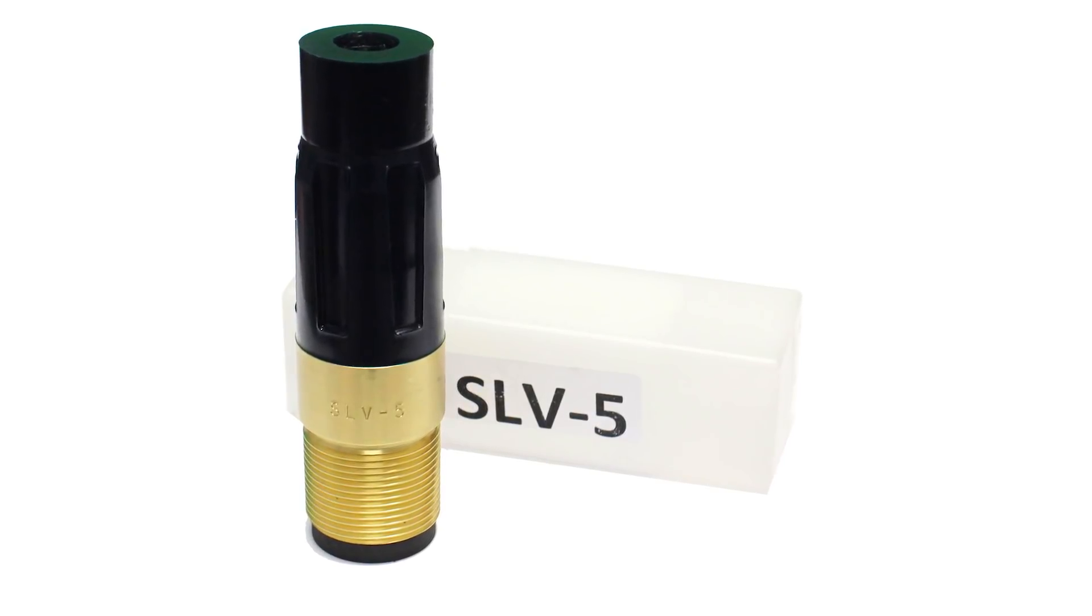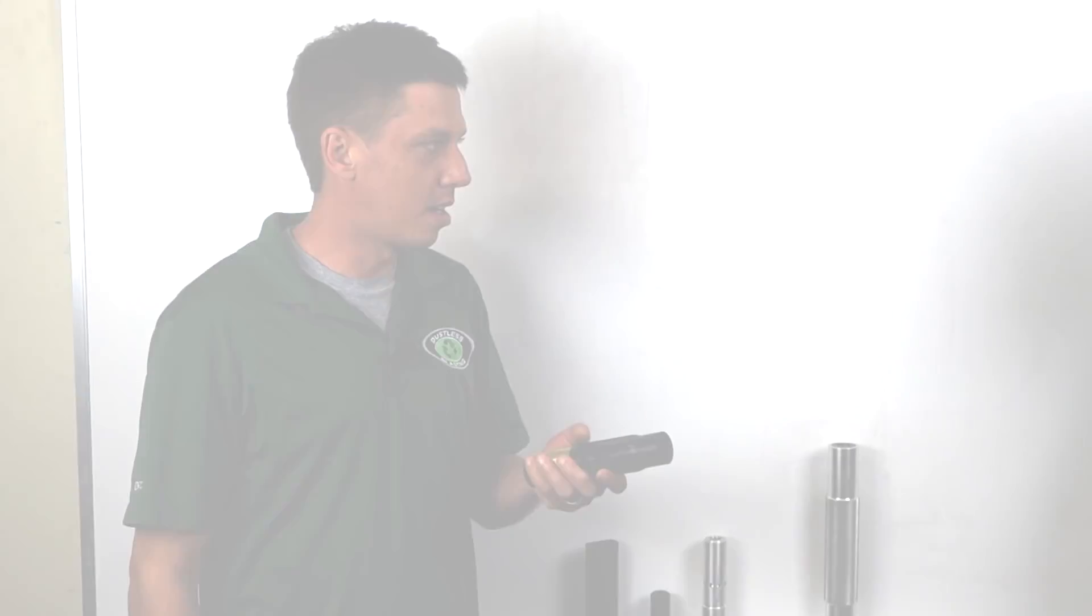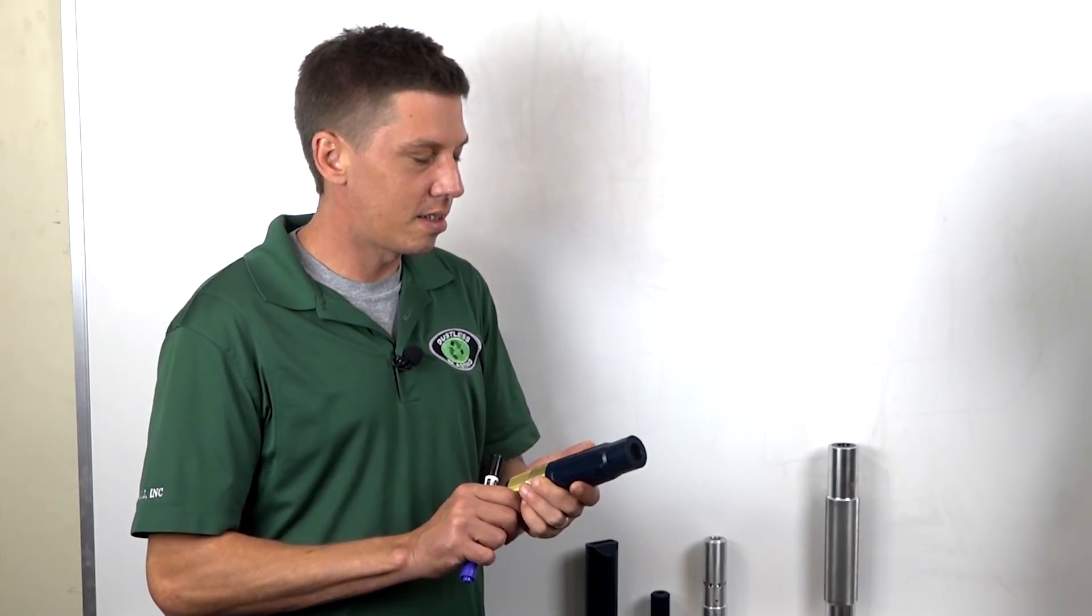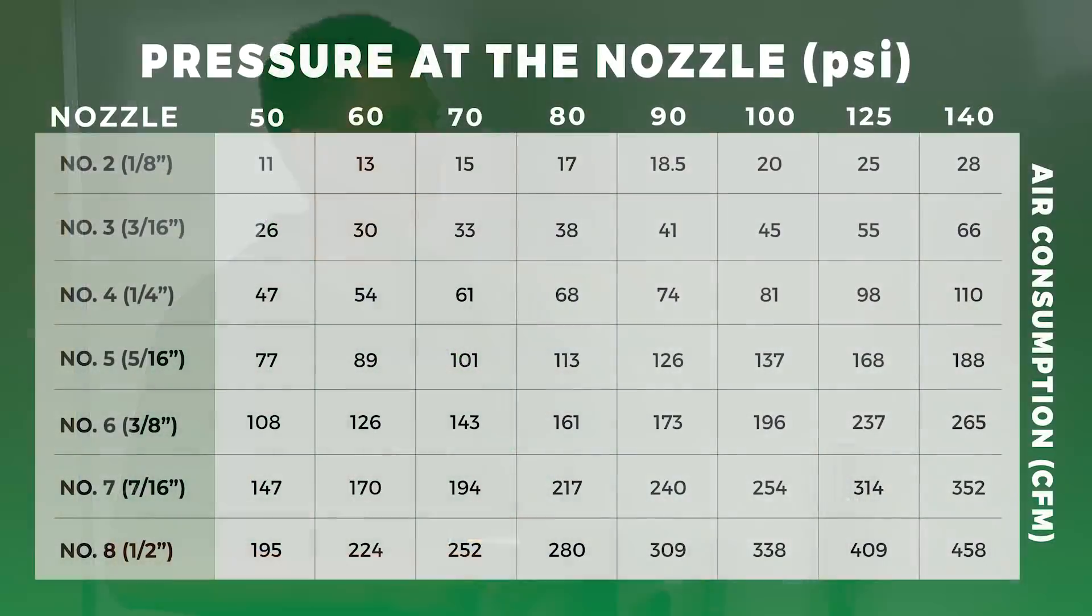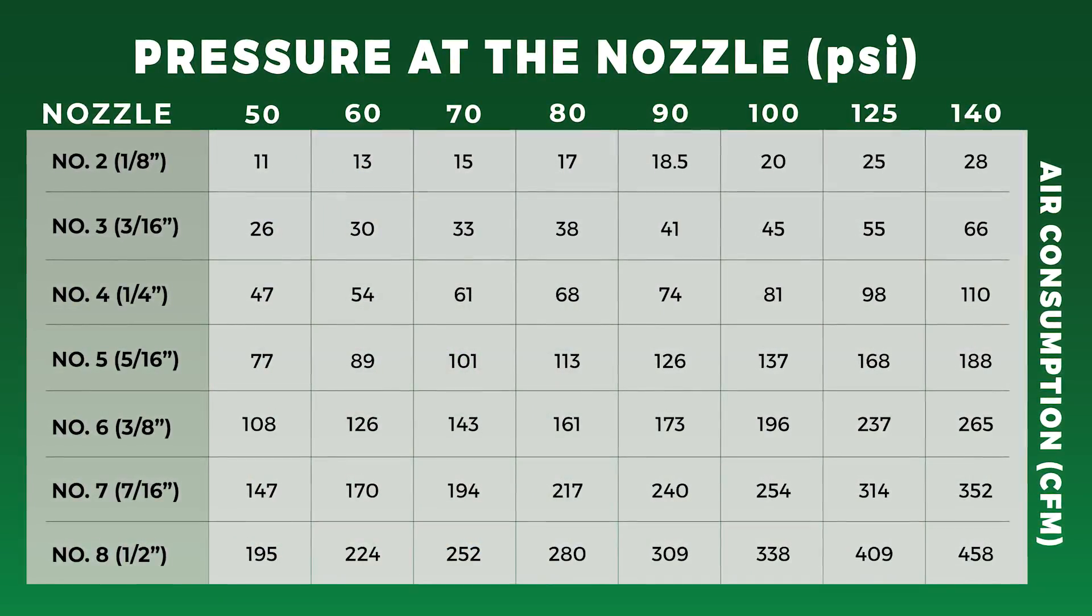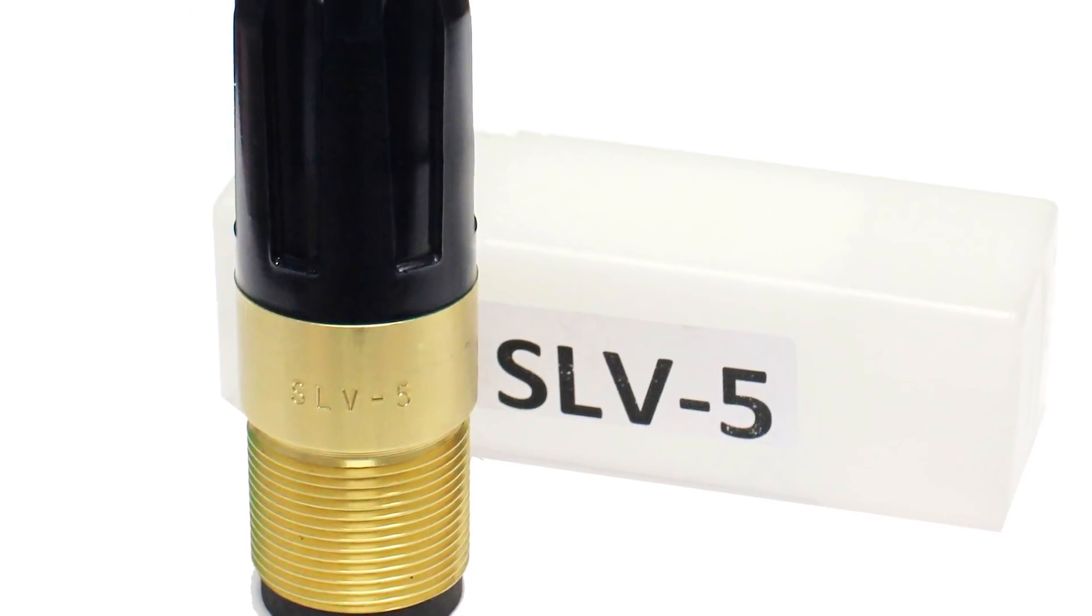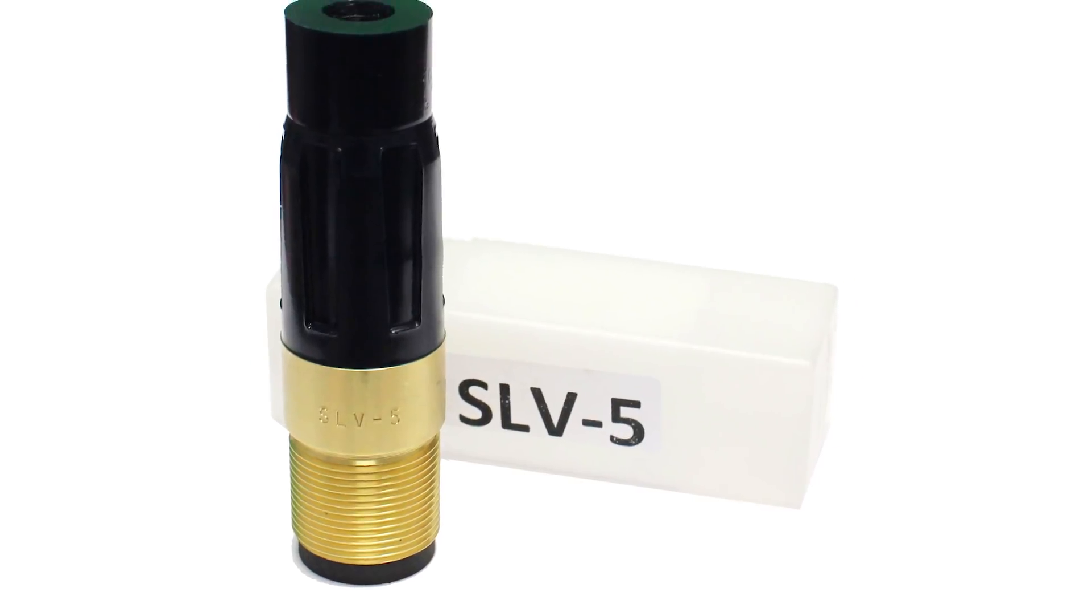The sizes on these things are really the most important about selecting what nozzle you use. It's really dependent on what size air compressor you have. And if you're uncertain on how to size it, there's nozzle air consumption charts. And we'll probably paste one up here on the video. But the number five, these numbers, they represent sixteenths of an inch. The number five would be a five sixteenths.